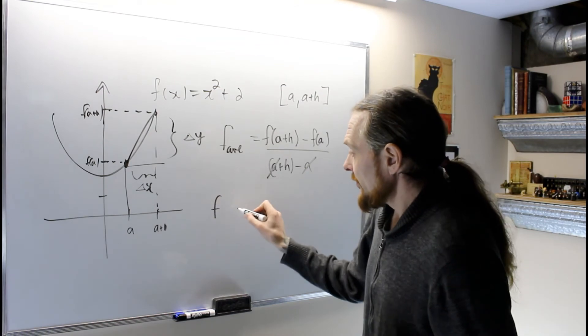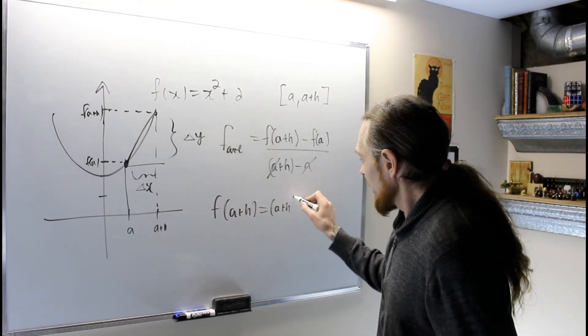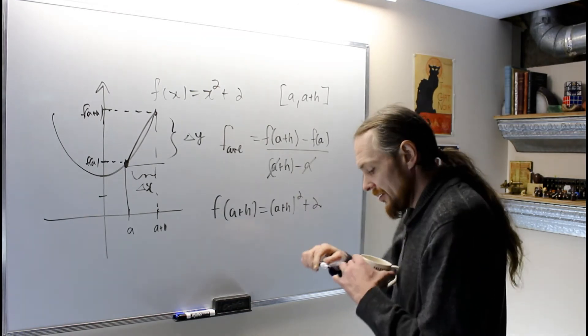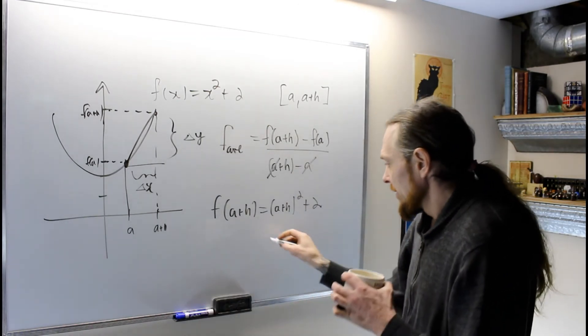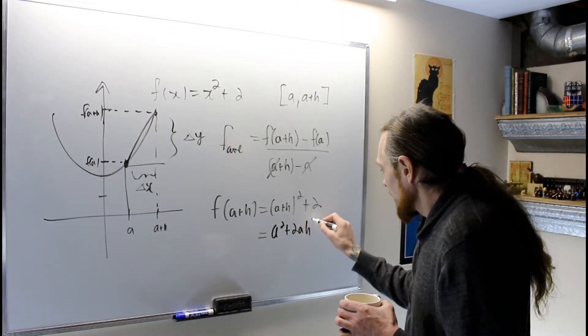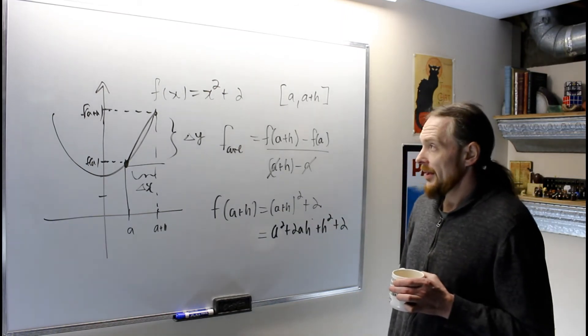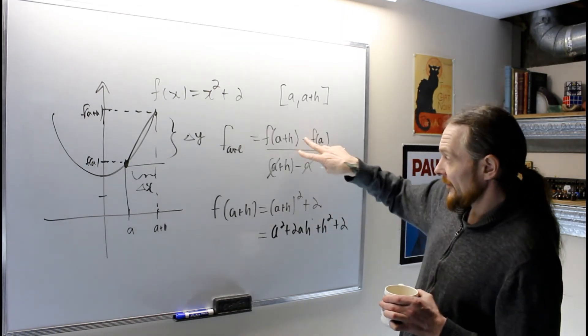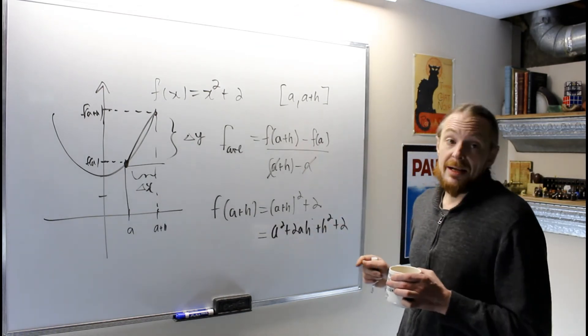For our function, f(a+h) is (a+h)² + 2, which is a² + 2ah + h² + 2. What we're going to do is use the formula and put this expression that I've calculated into there and simplify.